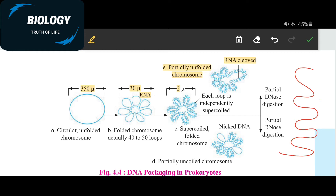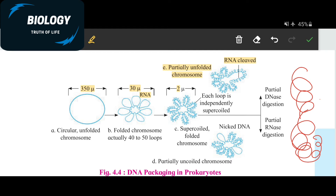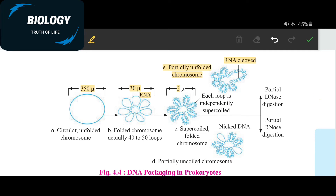How can this DNA molecule be accommodated in such a small nucleus? It can be observed that this DNA gets condensed, coiled, and super coiled to fit into such a small nucleus. It can shrink, get condensed to produce thickness, produce coiling, and even super coiling, so that it can fit into a small nucleus.